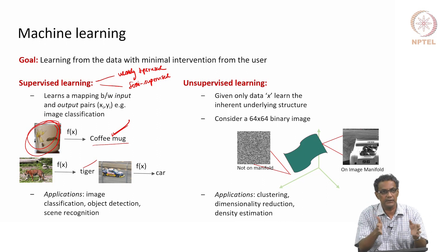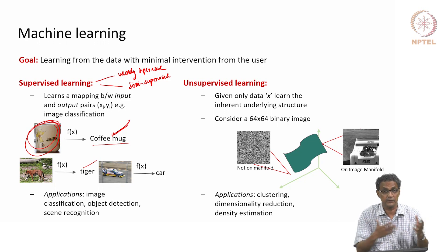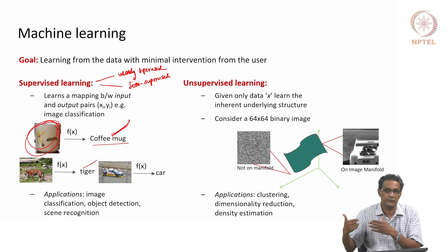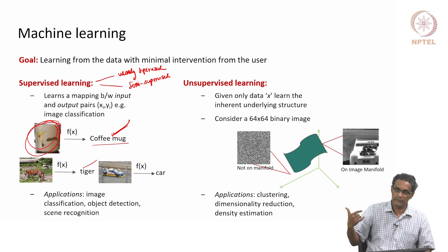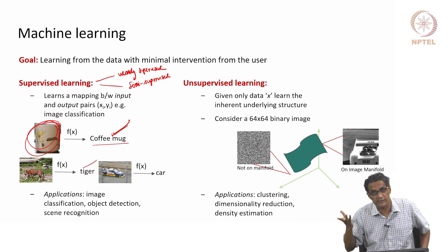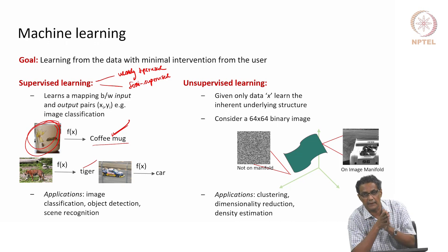Semi-supervised means labeling is available for only a fraction of the data. For example, you may have a million images but labeling information for only a thousand of them. Can you leverage that annotated fraction to generate labels for the other images? That is called semi-supervised.